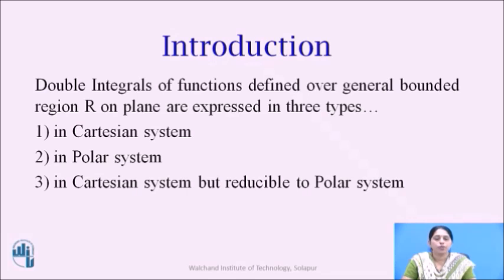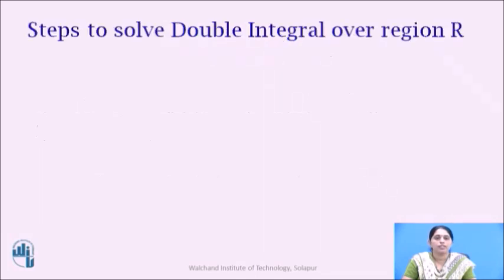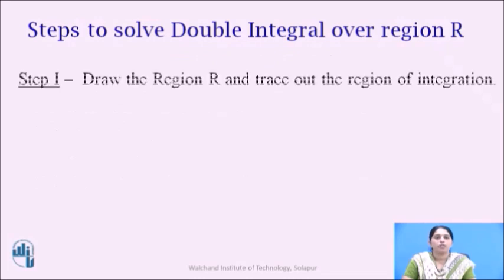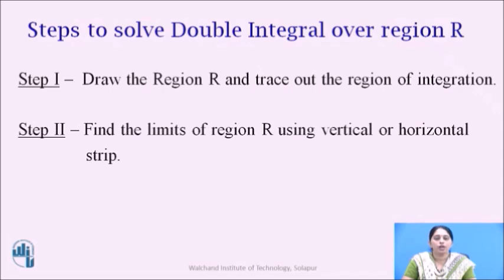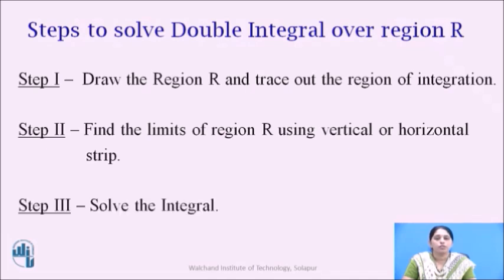Let us see the steps to solve a double integral over the region R. Step 1: draw the region R and trace out the region of integration. Step 2: find the limits of region R using a vertical or horizontal strip. Since the region is expressed in the Cartesian system, we use the vertical or horizontal strip to find the limits. Step 3: solve the integral.